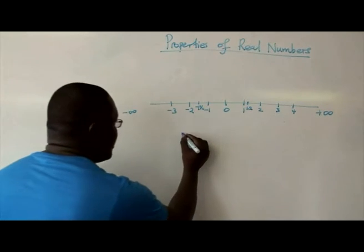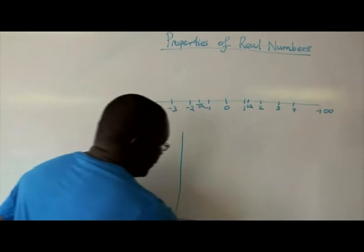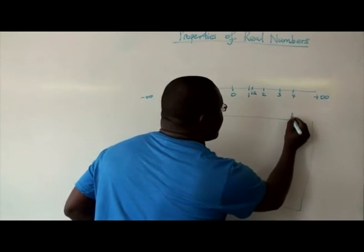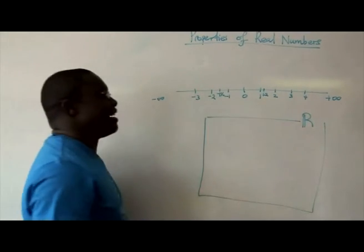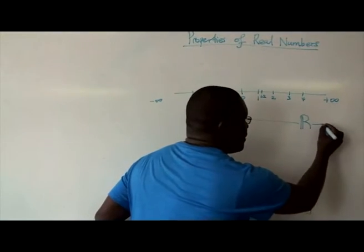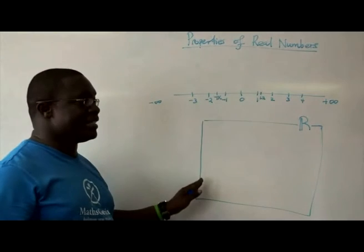So I'll quickly draw that one. I'm not an artist, but yeah, I'll try. Right. So real numbers are denoted with this R, capital R. So that's the set of real numbers.